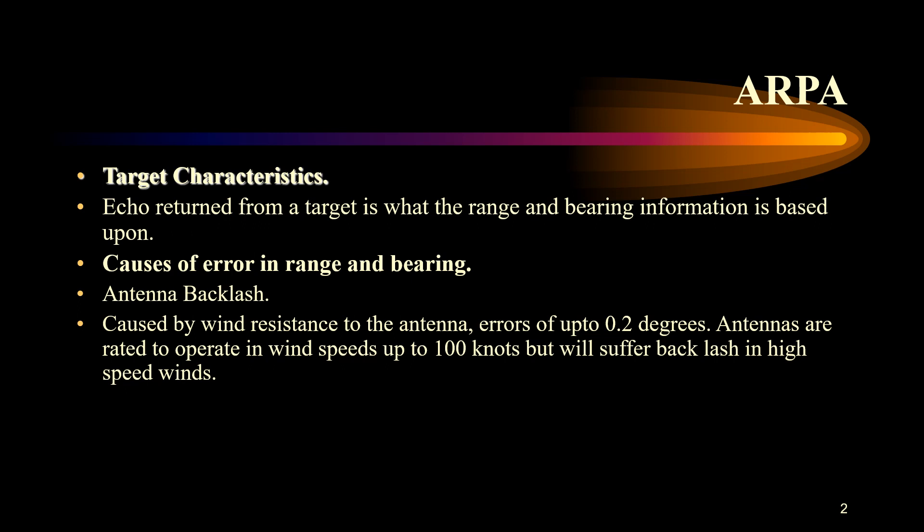The range and bearing information is based on the echo returned from a target. The first cause of error in the calculation of range and bearing refers to antenna backlash, which is caused by the wind resistance effect on the antennas. It causes a bearing error of about plus or minus 0.2 of a degree.